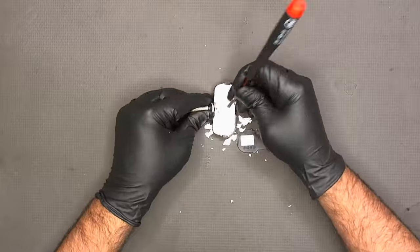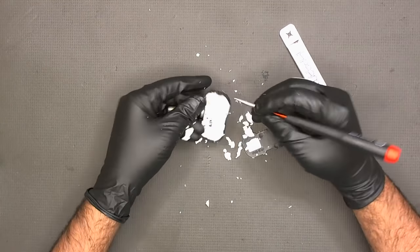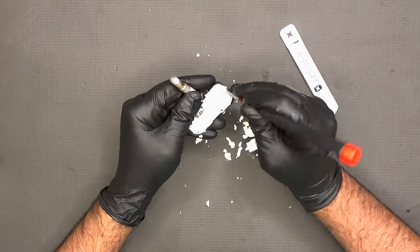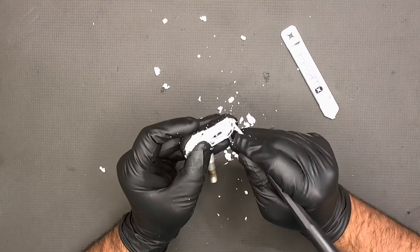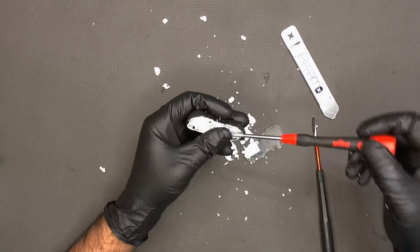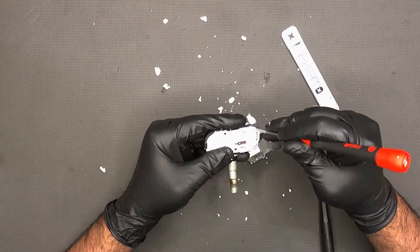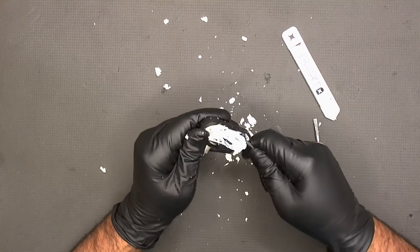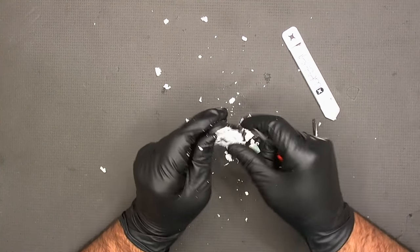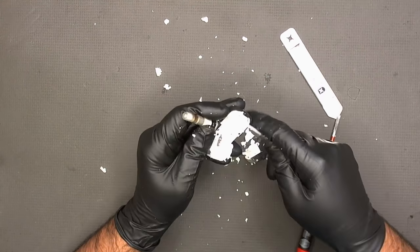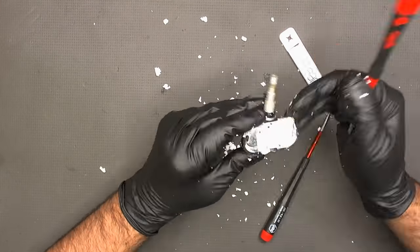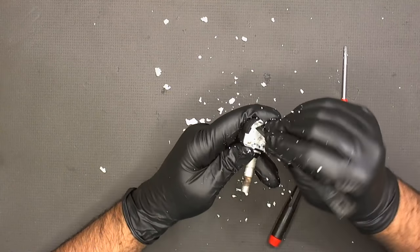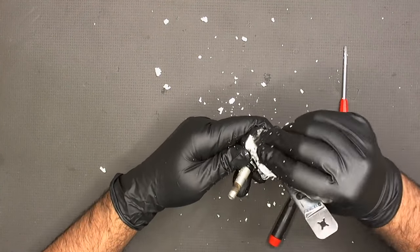When you are scratching it off from this side, make sure that you are easy on it and don't break the circuit board. So what we are going to do is check it out. You need to make sure that all the sides are properly cleaned up from silicon.